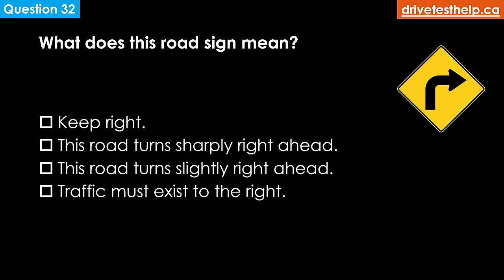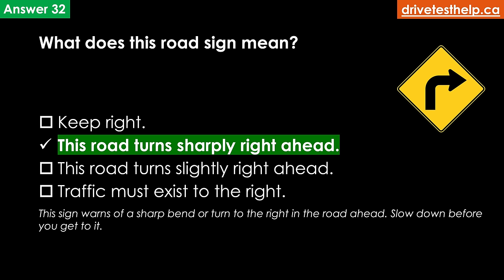What does this road sign mean? Options: keep right; this road turns sharply right ahead; this road turns slightly right ahead; traffic must exit to the right. The correct answer is this road turns sharply right ahead. This sign warns of a sharp bend or turn to the right in the road ahead — slow down before you get to it.